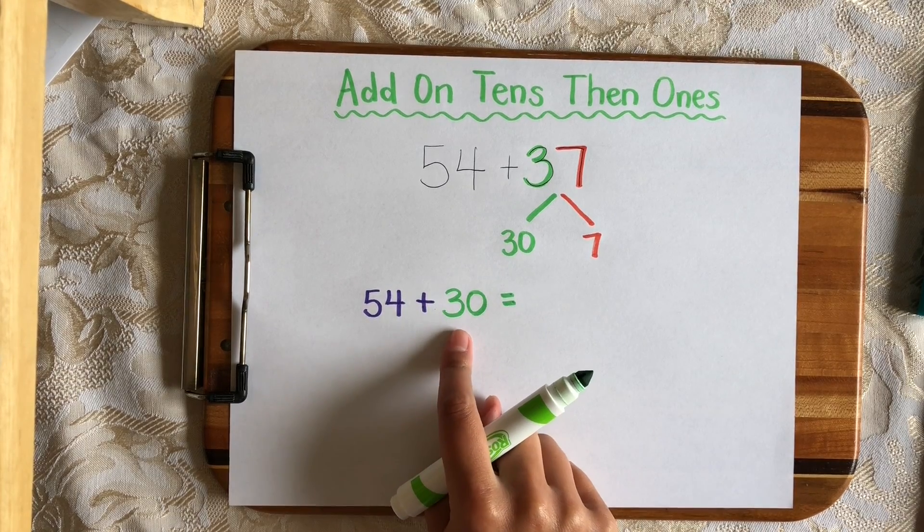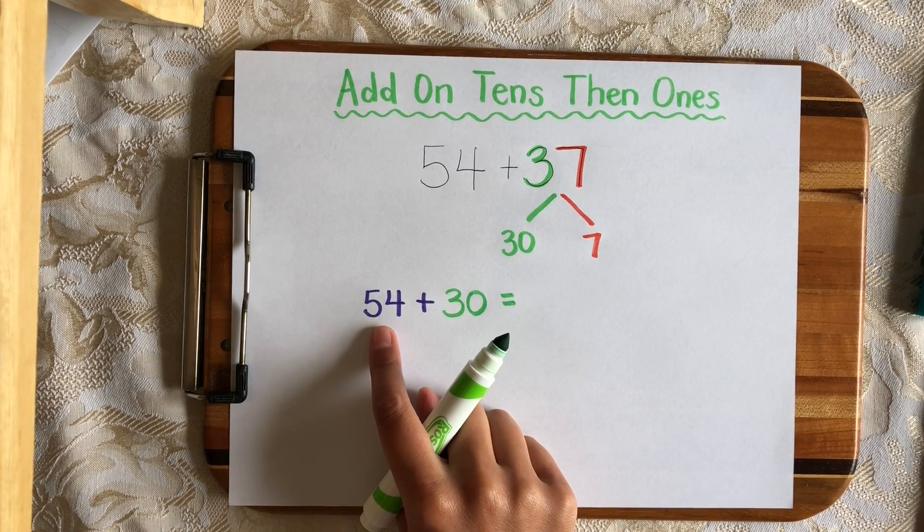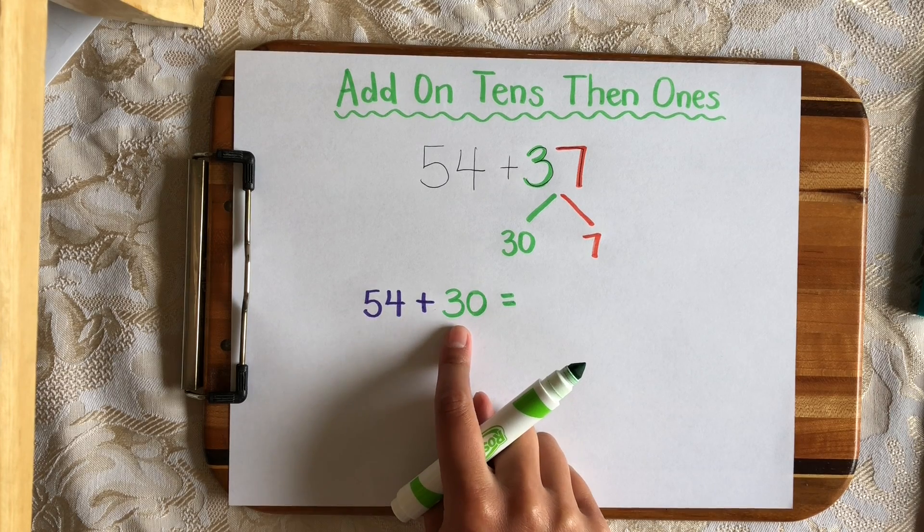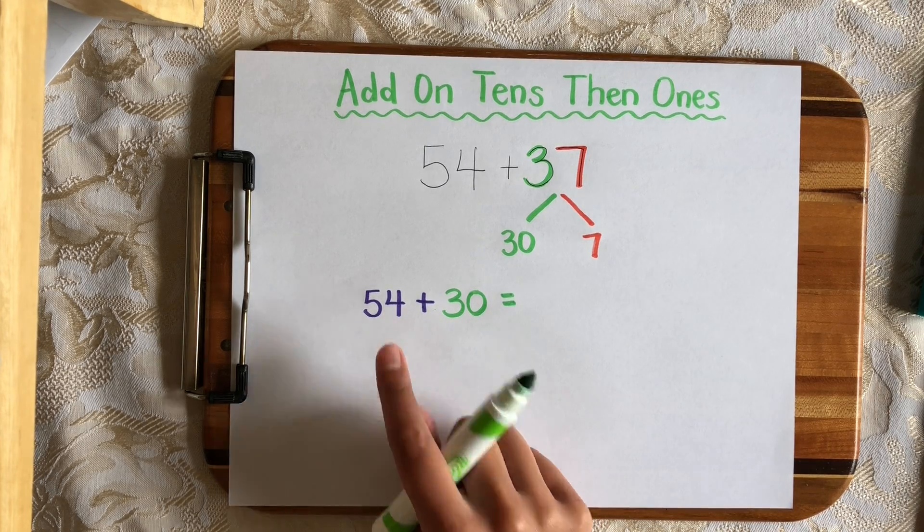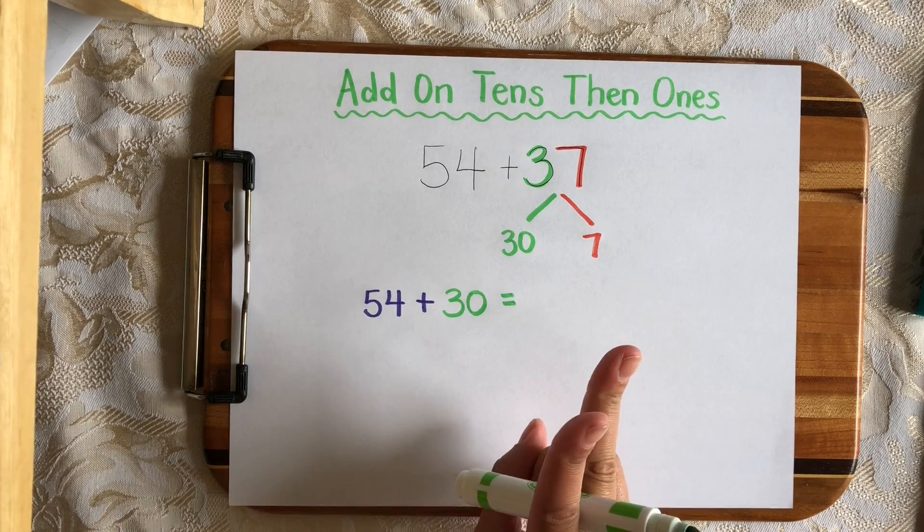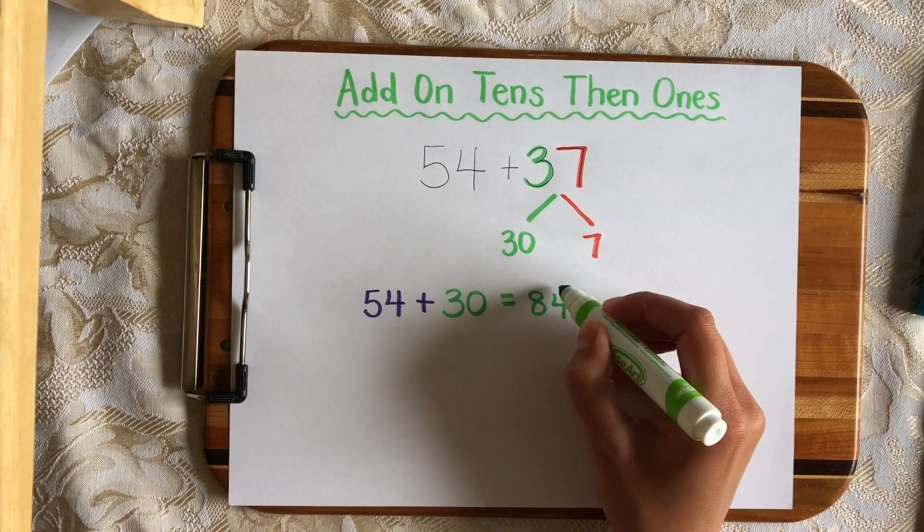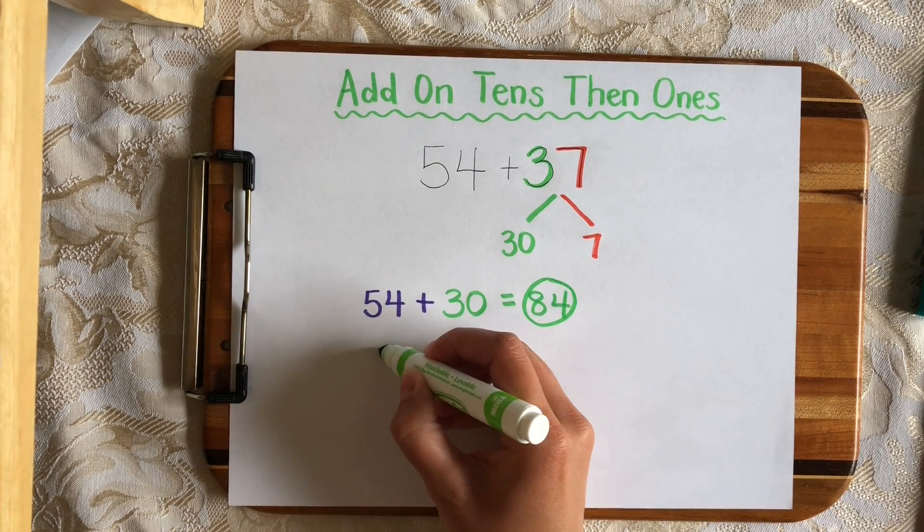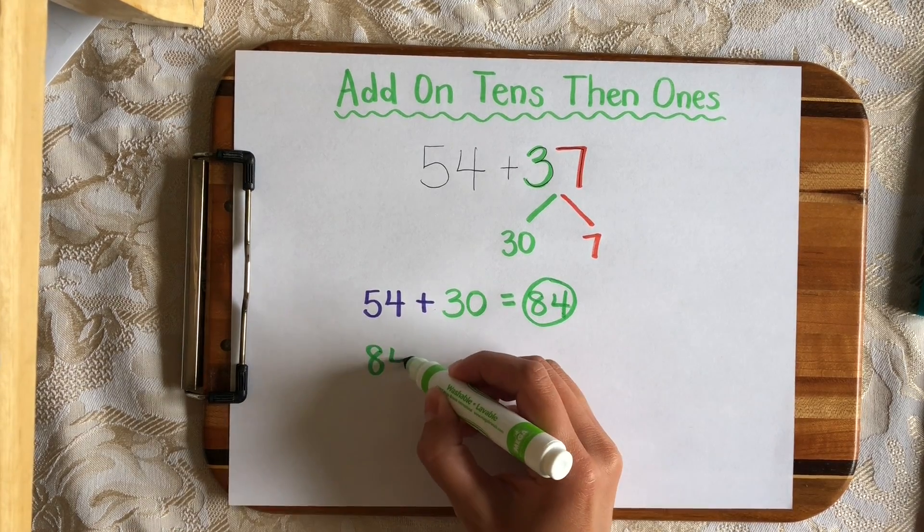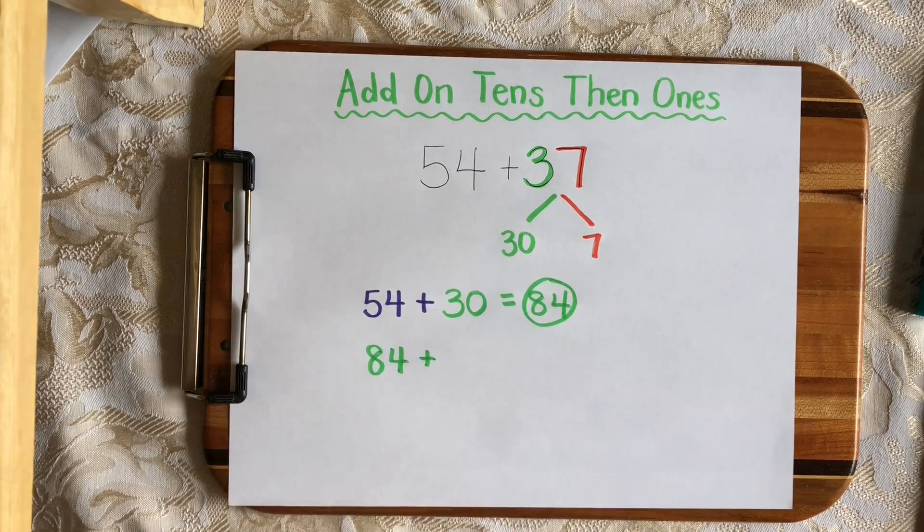So now I know how to count by tens starting from any number. So I can start from 54, and I'm going to move up three tens. So 54, 64, 74, 84. And using this number now, I'm going to add on the ones from 37.